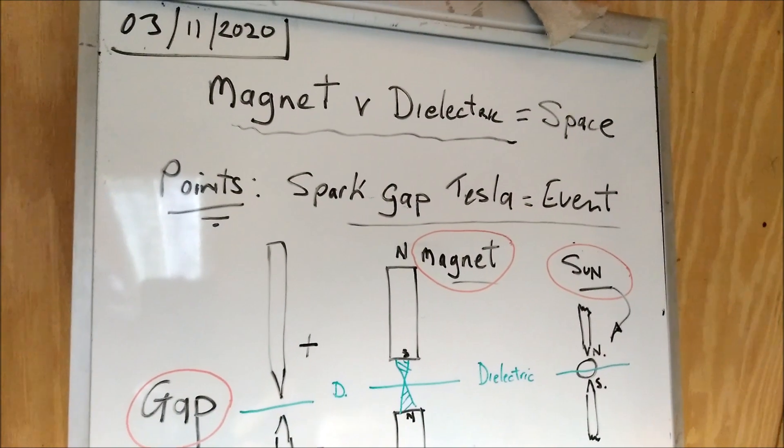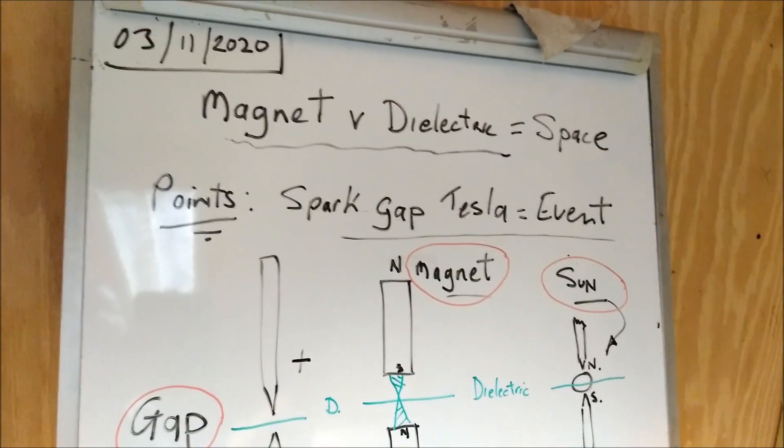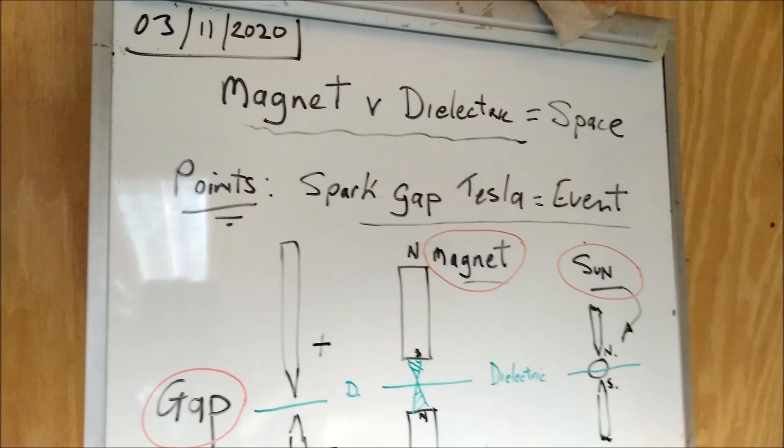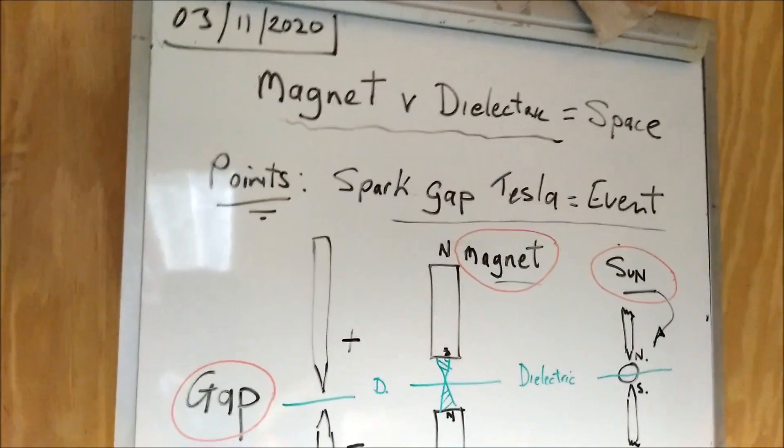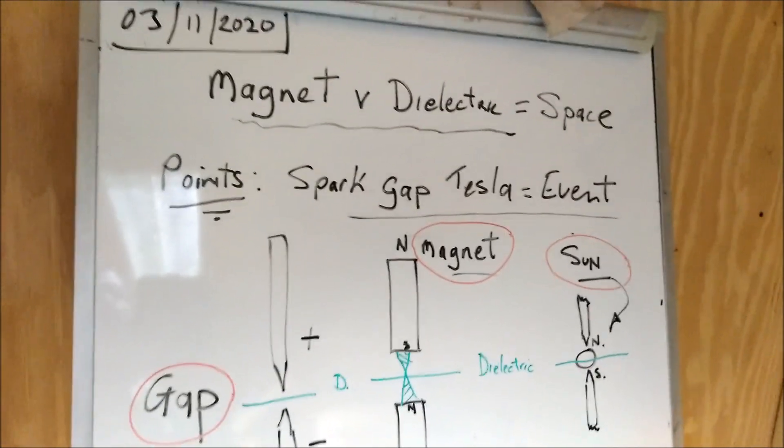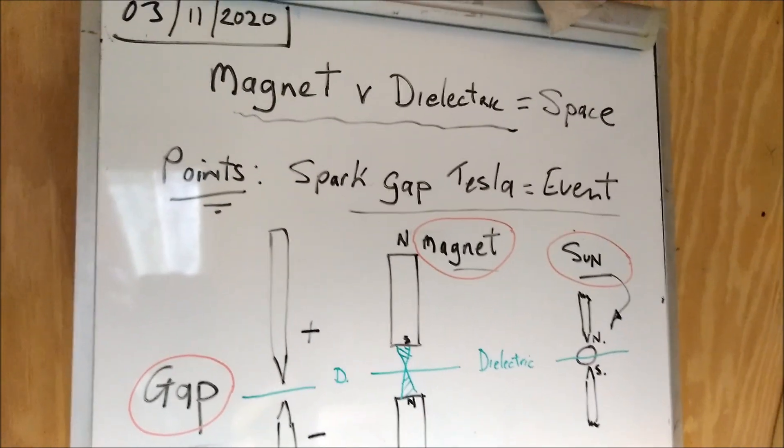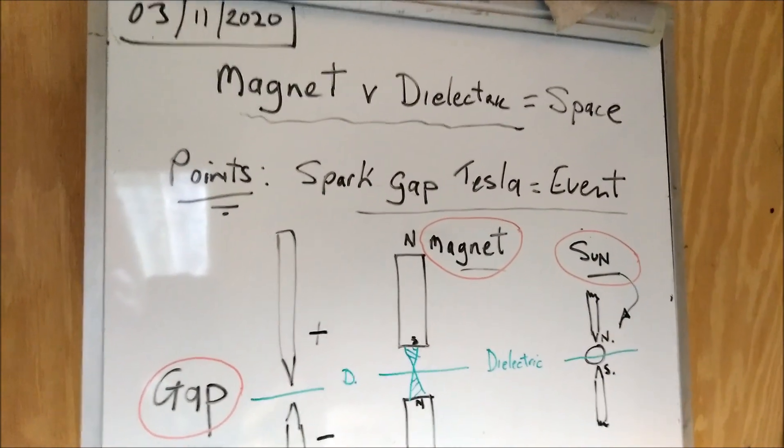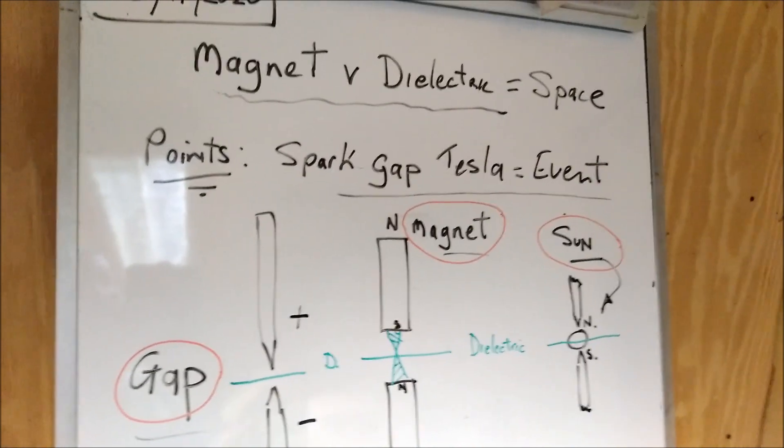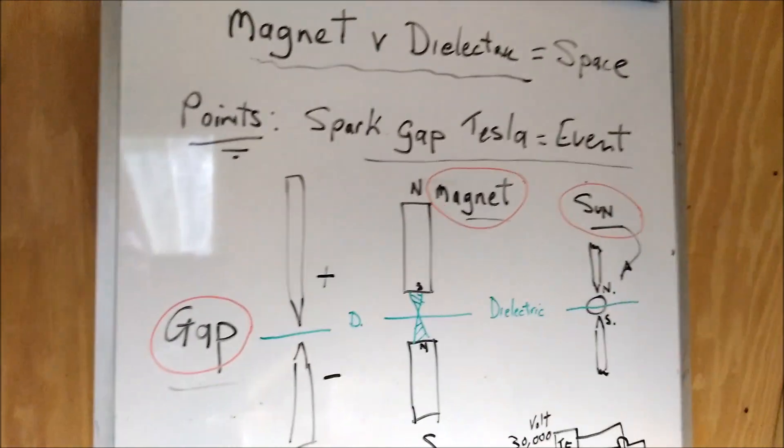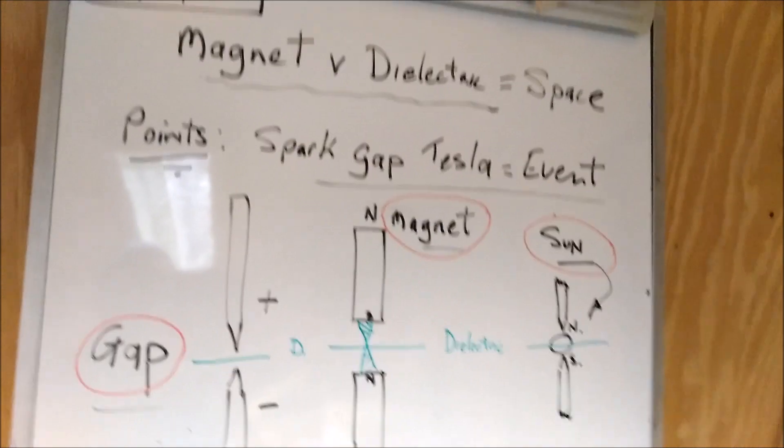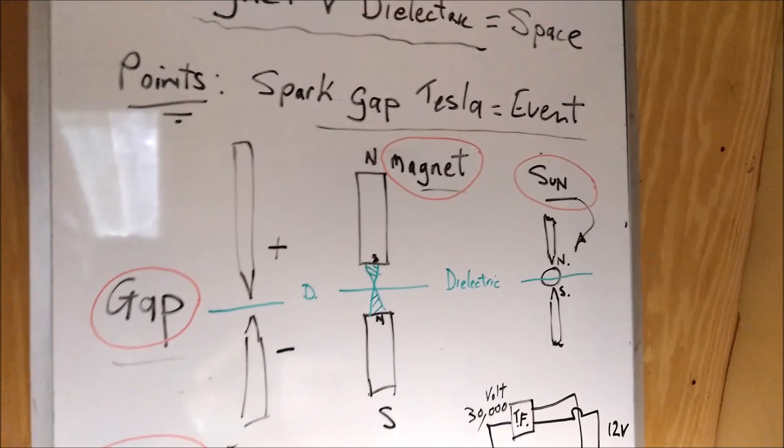Working from the Tesla spark gap, Nikola Tesla suggested that a spark at the spark gap, he called it an event. And I think he was right because it's an event in the ether, and that's what's got me thinking along this autogen line.